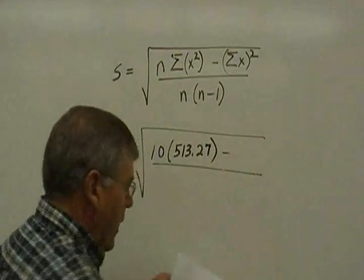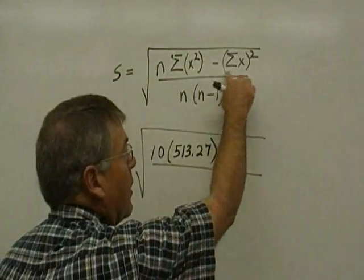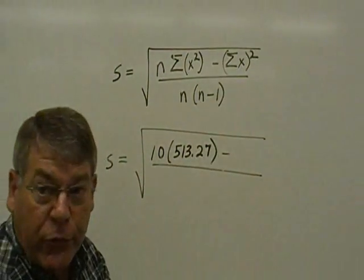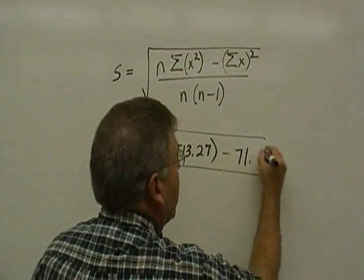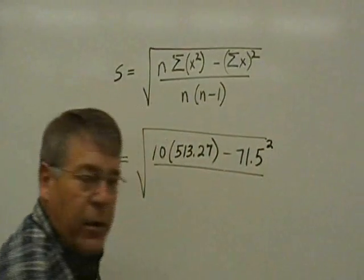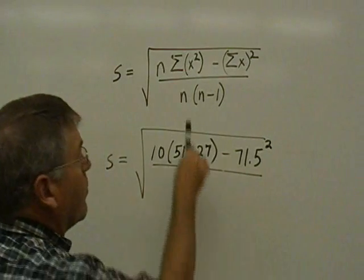The sum of x squared is the answer at the bottom of our second column. That number was 513.27. Now, from that, we have to subtract the sum of x. That's the answer to the first column, 71.5, and that number must be squared.